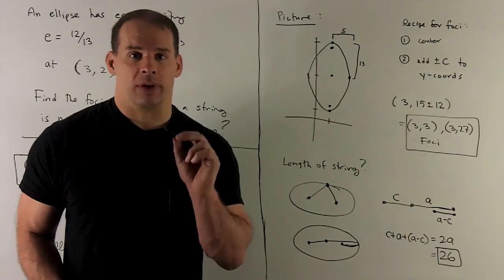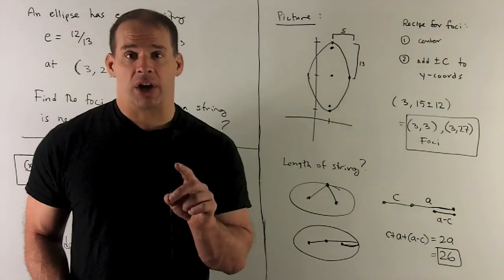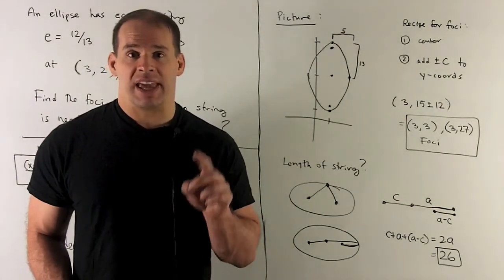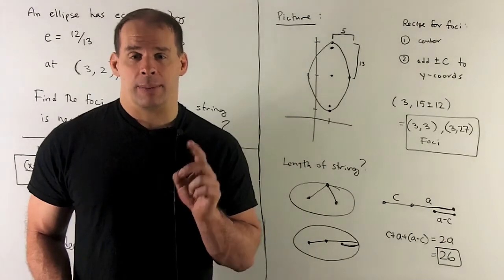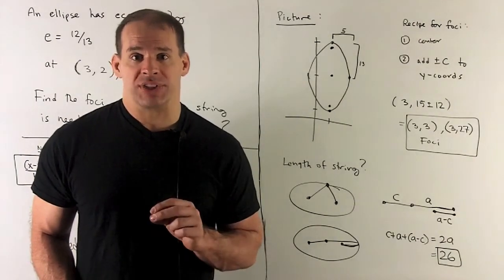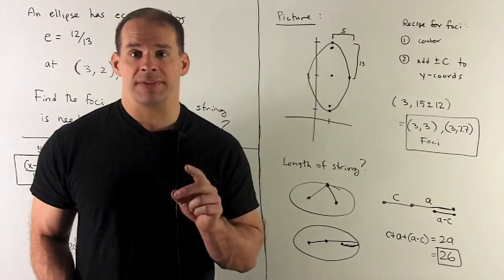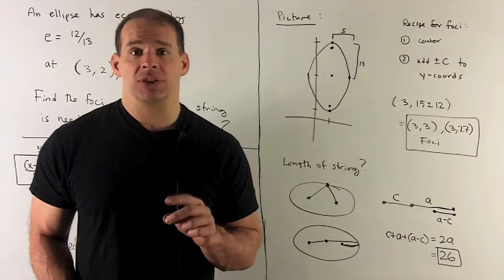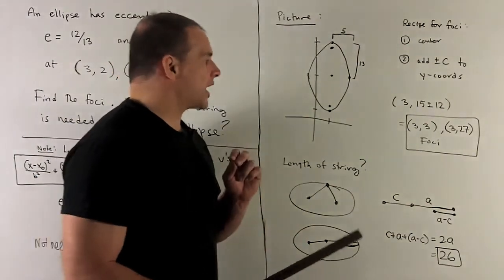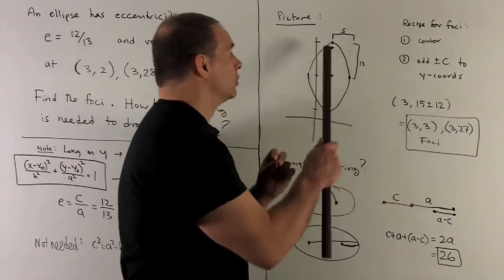Now, I want to find the foci. The recipe for finding the foci is: you find your center, determine what direction you're long in. In this case we're long in y, then I'm going to take c, add and subtract that to the y value of the center. So in this case, we're taking (3,15), I'm going to add and subtract 12 from 15, what's left over is the foci. So we're going to have foci at (3,3) and (3,27).